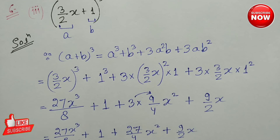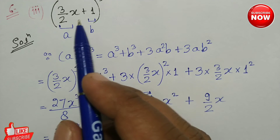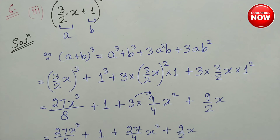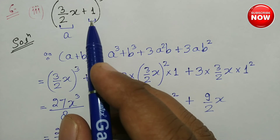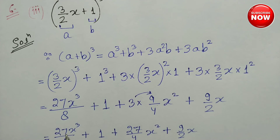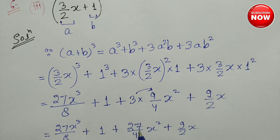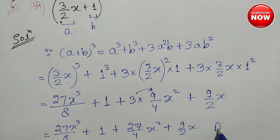तो यह हमें मिल जाएगा (3/2x + 1) whole cube का expansion। जो है: 27x³/8 + 1 + 27x²/4 + 9x/2. यही (3/2x + 1) cube का final answer है।